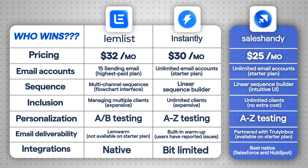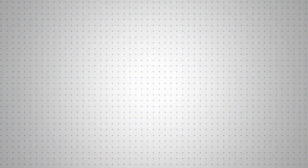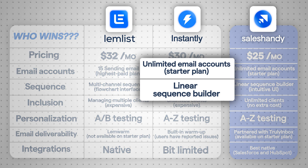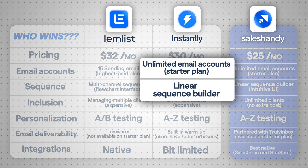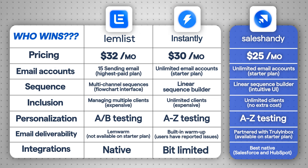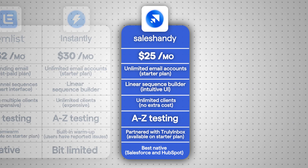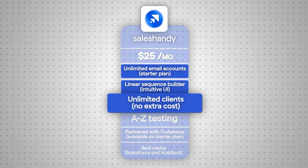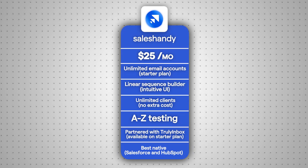So, what's the final verdict? Well, it depends on your needs. If you want multi-channel outreach and don't mind the higher price, Lemlist could be your pick. But if you need unlimited email accounts and simple sequence building, Instantly might just be the way to go. But here's a thought — why not check out Sales Handy? It offers the best features from both tools at a lower price point, and it's more scalable for agencies and multi-client users.